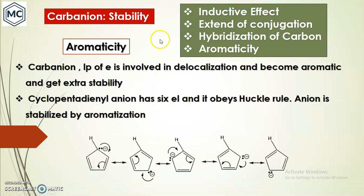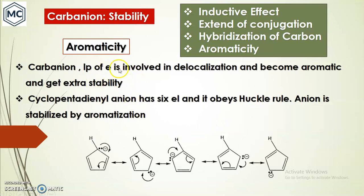The fourth factor is aromaticity. The cyclopentadienyl anion has six pi electrons (2+2+2), obeys the Hückel rule, and is an aromatic compound. It is resonance-stabilized, and when a carbanion is delocalized to become aromatic, it gains extra stability. These are the four factors that determine carbanion stability.